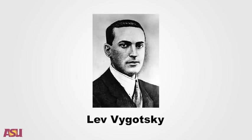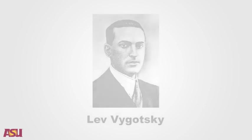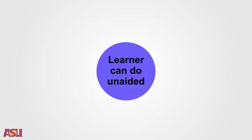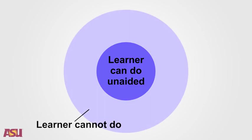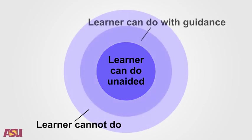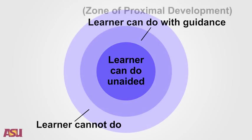Teachers should be aware of three different learner zones. One, what the learner can already do. Two, what the learner cannot do. And three, what the learner can do with guidance from the teacher. This third zone he calls the zone of proximal development.